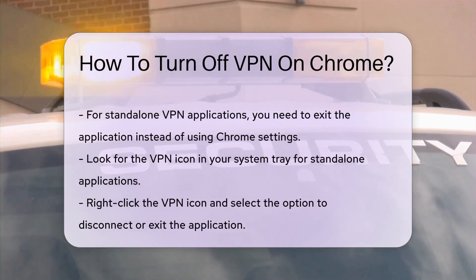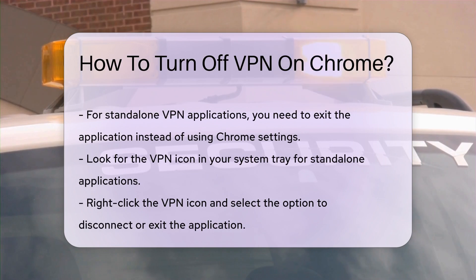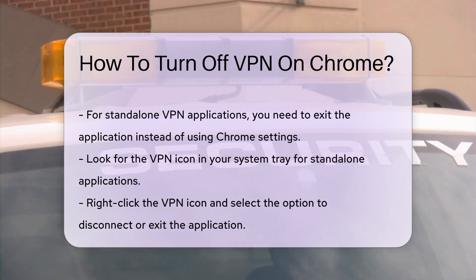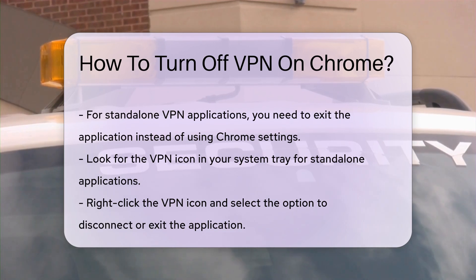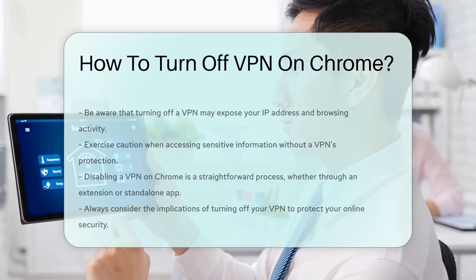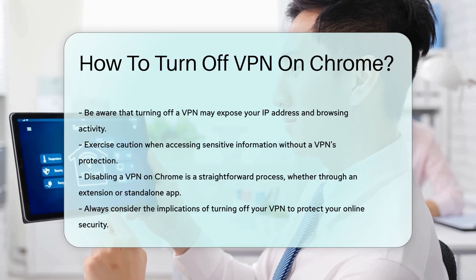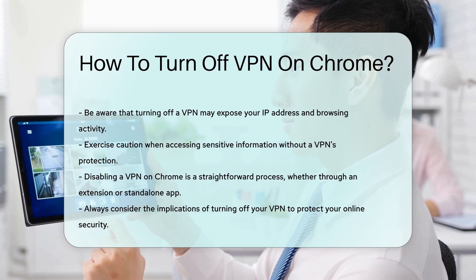If you are using a standalone VPN application, you will need to exit the application itself. Look for the VPN icon in your system tray. Right-click on the icon and select the option to disconnect or exit. Remember that turning off your VPN may expose your IP address and browsing activity.